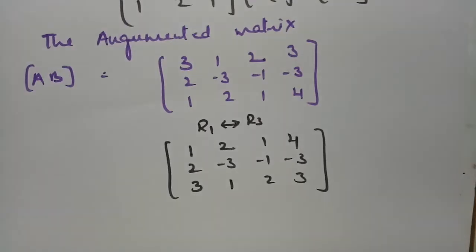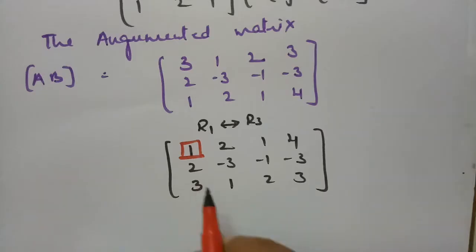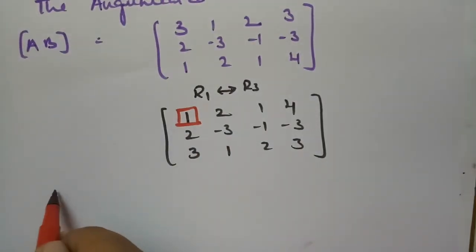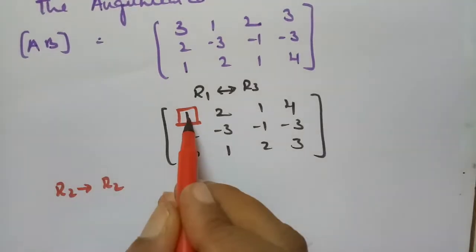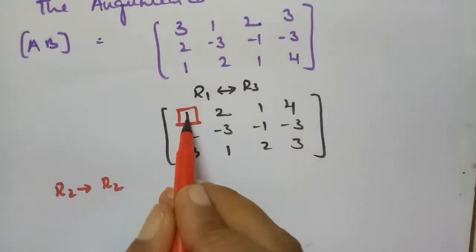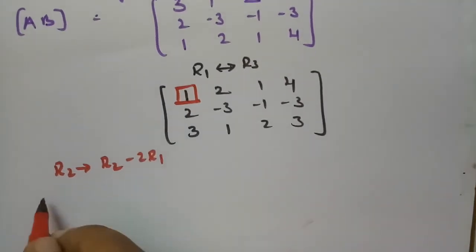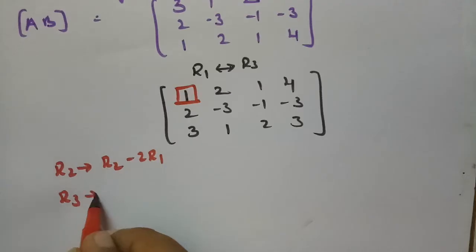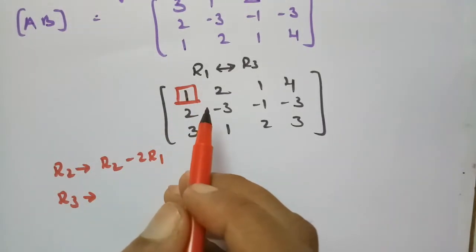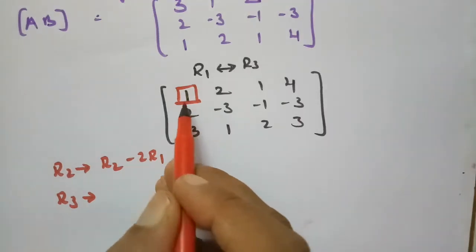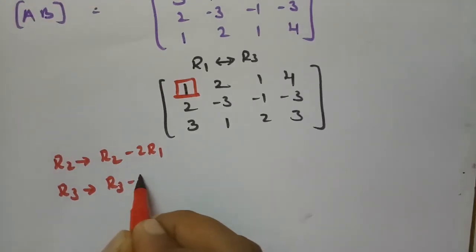Now I want to use this first diagonal element to make the entries below it zero. To make R2's first element 0, the operation is R2 minus 2·R1. To make R3's first element 0, the operation is R3 minus 3·R1.